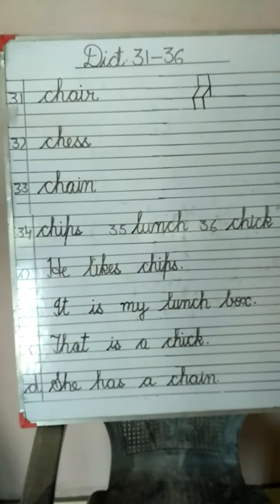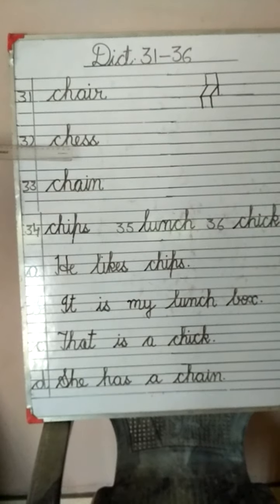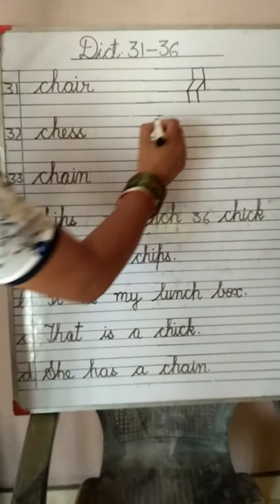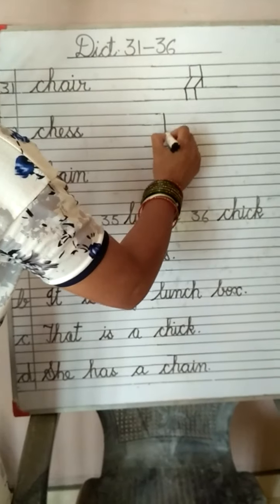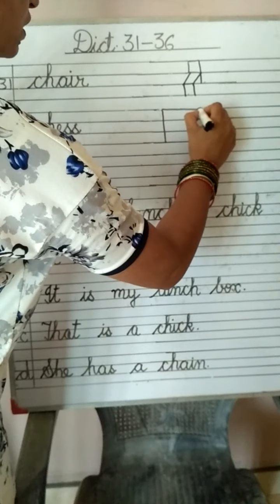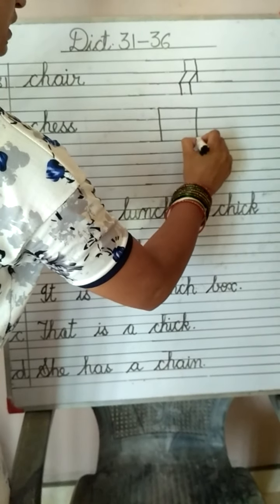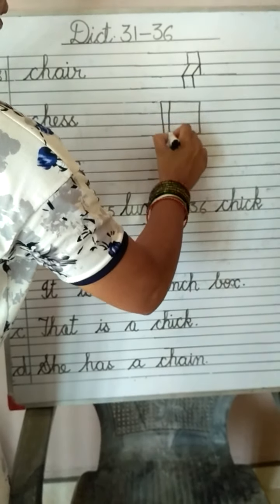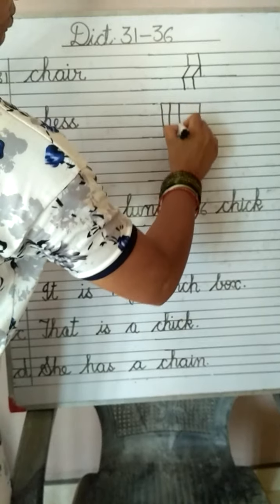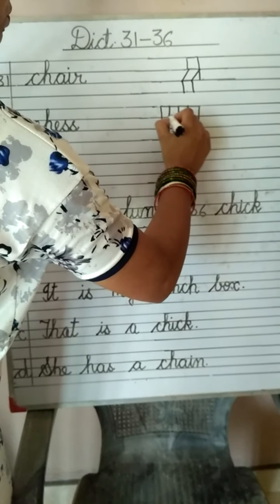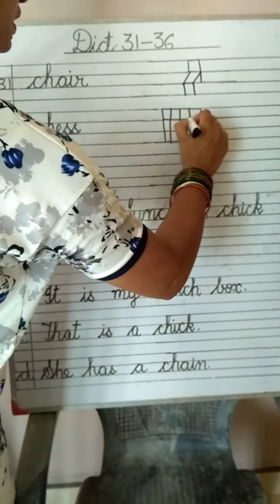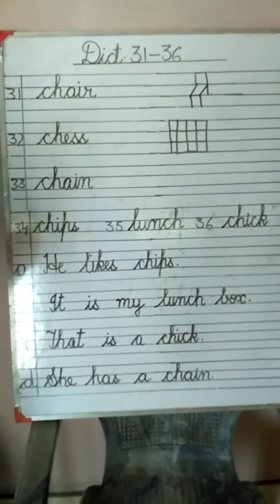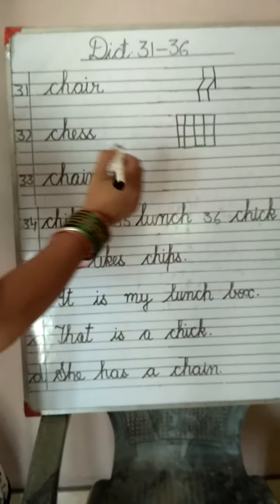This is chair. Next is C-H-E-S-S. Chess. For chess you will draw a box with four lines, then you will draw straight lines. In this way there will be a check pattern.